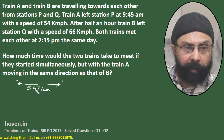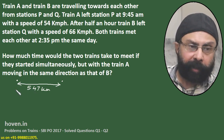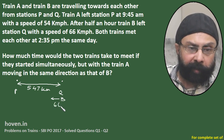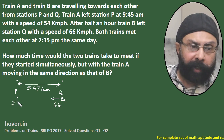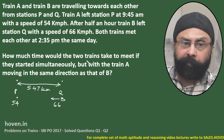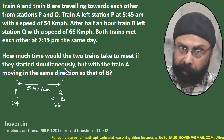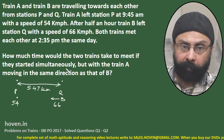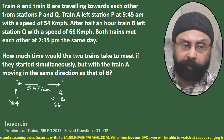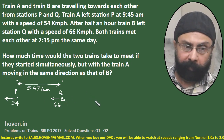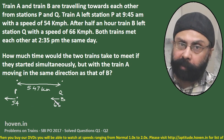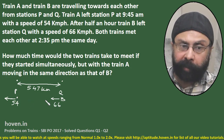So the distance P to Q is 547 km. Train A is running at 54 kph and train B at 66 kph. Now, what does the question ask? How much time would the two trains take to meet if they started simultaneously — not after a gap of half an hour — but with train A moving in the same direction as train B, i.e., A is going away from B, not towards it.